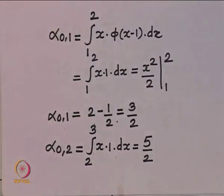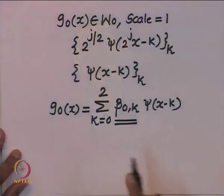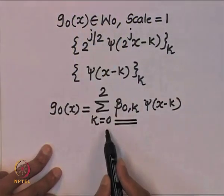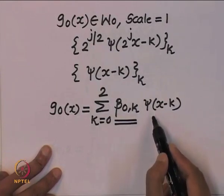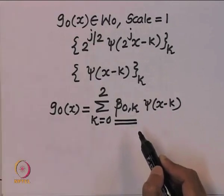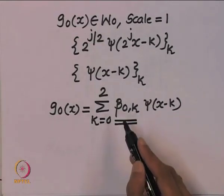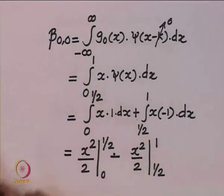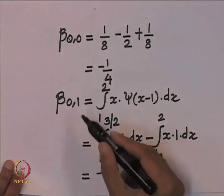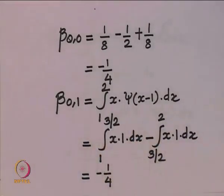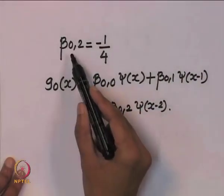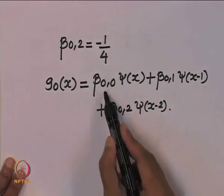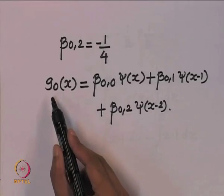We then found projections in W0. We realized that g_0(x) belonging to W0 is a summation of details and corresponding translated basis functions, so the task was to find the beta values. We calculated beta_{0,0}, beta_{0,1}, and beta_{0,2}, and realized all beta values were −1/4. With these beta values we can correspondingly find g_0(x).